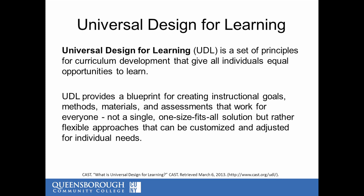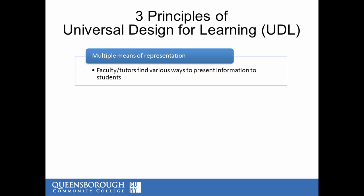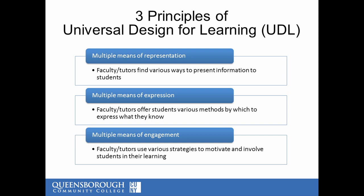Think about curb cuts out on the street, and automatic doors that many of us use every day. These technologies are of near universal benefit — they make built space more accessible and friendly to all users, not just users with physical disabilities. Informed by cognitive neuroscience, universal design for learning is grounded in the idea that because students' learning needs are diverse, our instructional strategies and materials must also be diverse. This diversity is central to the three principles of UDL: multiple means of representation, multiple means of expression, and multiple means of engagement.